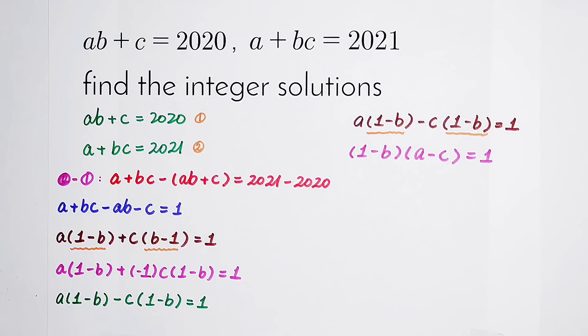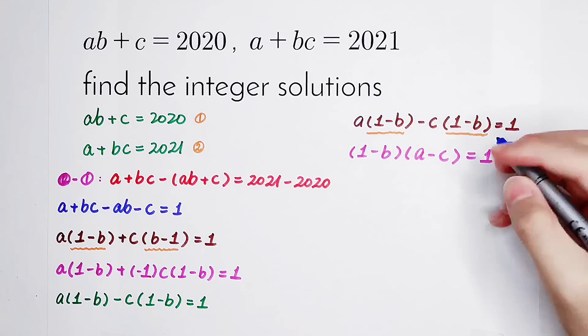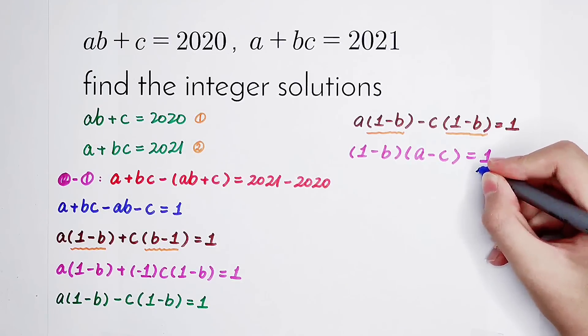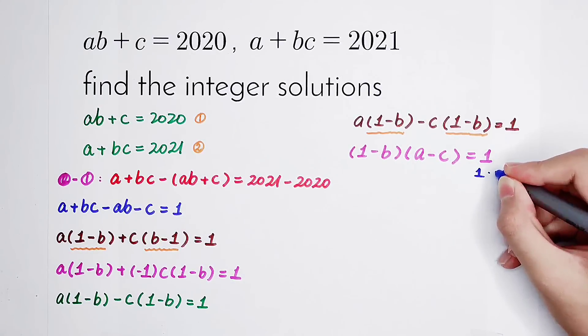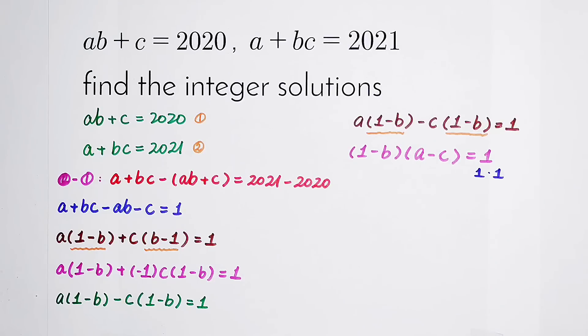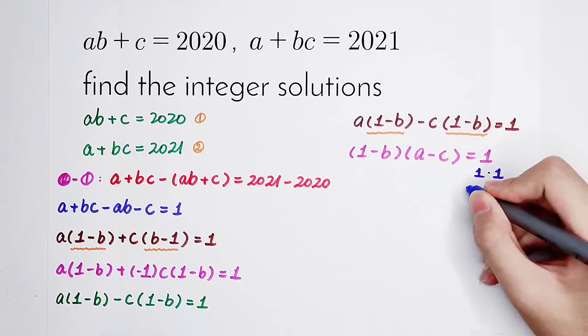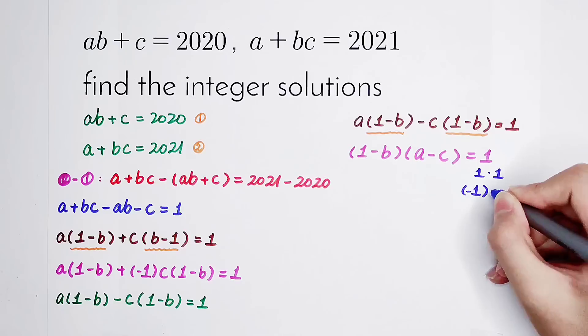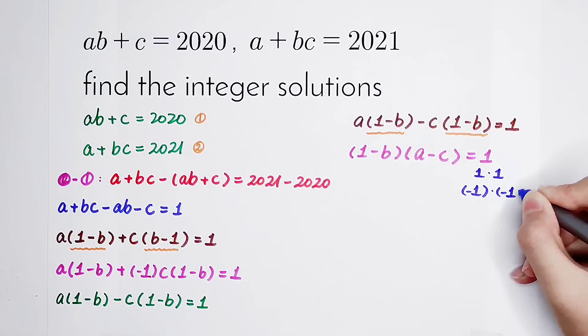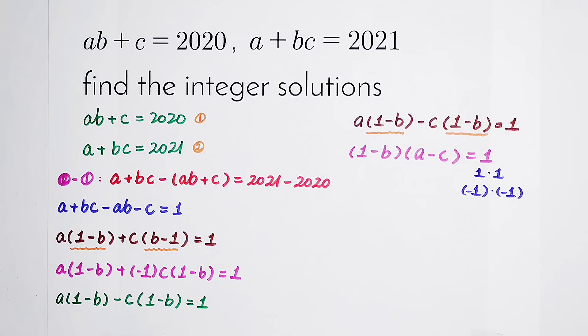So now I have to find the factors of 1. 1 can be written as itself times 1. It can be also written as minus 1 times minus 1. Amazing, isn't it?